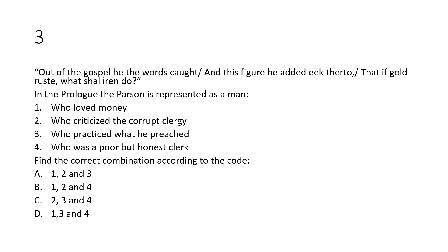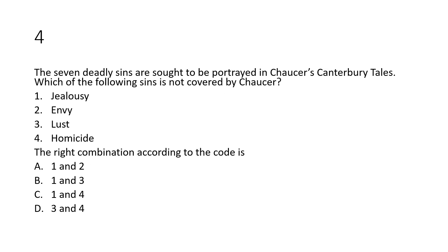Question number three: 'Out of the gospel he the word took, and this figure he added thereto — and that is: if gold rust, what shall iron do?' In the Prologue, this person is represented as a man: one, who loved money; two, who criticized the corrupt clergy; three, who practiced what he preached; four, who was a poor but honest clerk.